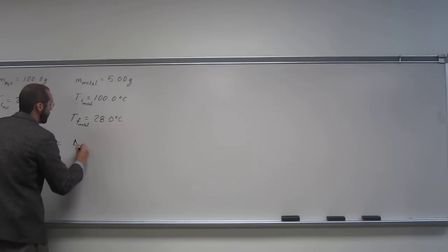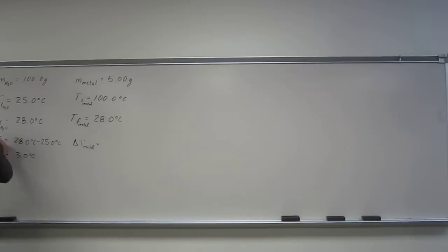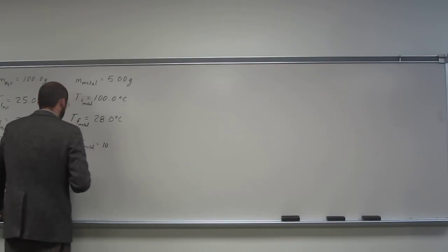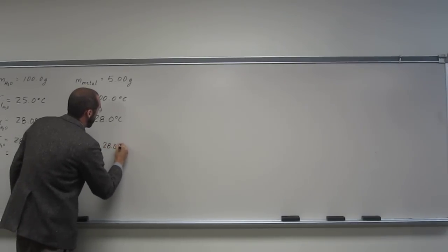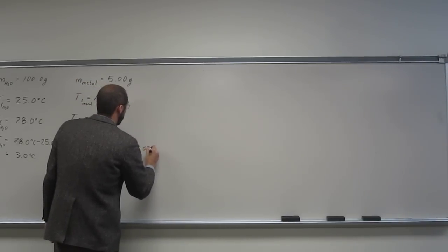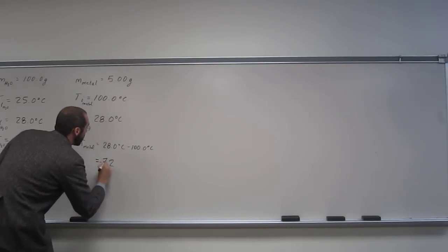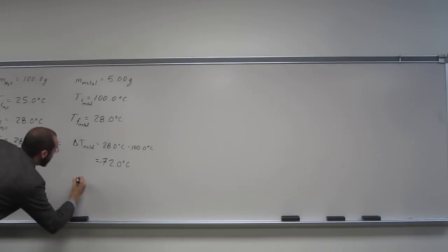And let's do the change in temperature for the metal. So 28.0 degrees Celsius minus 100.0 degrees Celsius is negative 72.0 degrees Celsius. So we've got that. It's wondering, what is the specific heat capacity of this metal? That's what we're looking for.